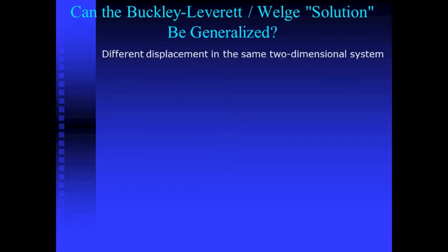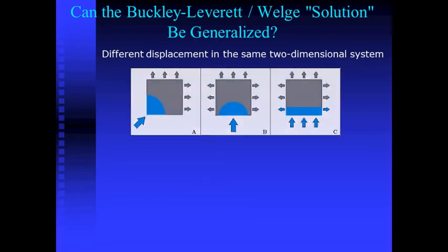Let's see, then, if it is possible to generalize the solution presented by Buckley and Leverett and complemented by Welch, and thus apply it in two or three dimensional systems. For that, we are going to see a simple two dimensional example. We are observing three different displacements in the same cell. In each displacement, the water injection is chosen in such a way as to generate different flow geometries. The first thing that can be observed is that there are more production ends.